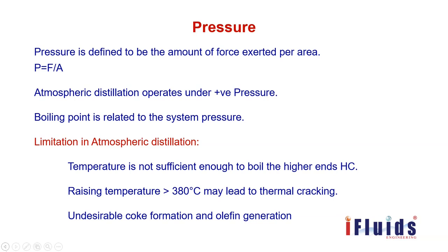We know that boiling point is related to the system pressure. Boiling point is the temperature at which the vapor pressure of liquid equals the atmospheric pressure. Here the atmospheric pressure refers to the system pressure only. So if we reduce the system pressure, we can reduce the boiling point — that is the key information we get from this.